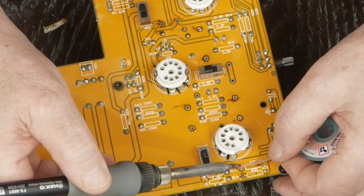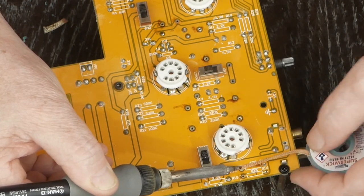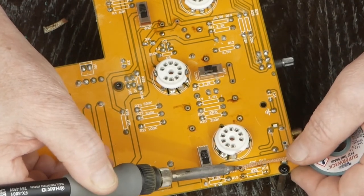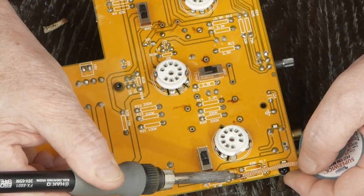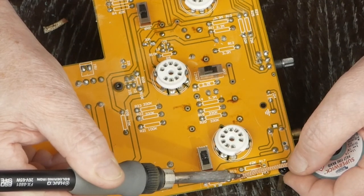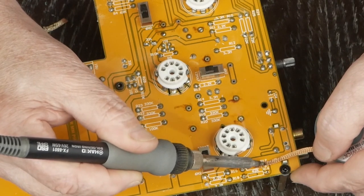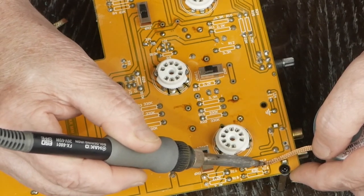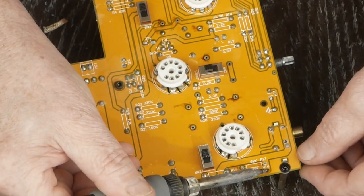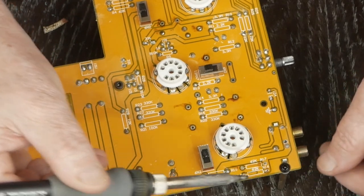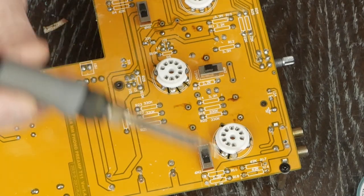I know there's a measurement called the 3 decibel rolloff point. And you would think, okay, that's where we want to set the rolloff point to, maybe like 20 hertz for the 3 decibel and that would be fine. But from my understanding, you actually want to multiply that times 10, which would mean you would want to set the low frequency rolloff point at about 2 hertz.